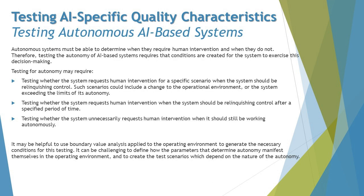In our previous tutorial we spoke about the challenges that can emerge when testing a general AI-based system that is self-learning. Here we are talking about autonomous systems, which do everything on their own. Autonomous systems must be able to determine when they require human intervention and when they do not.